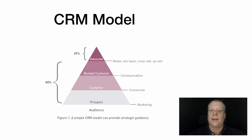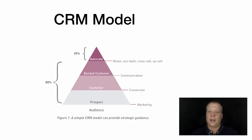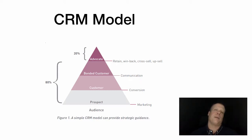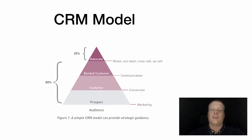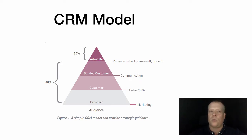A traditional model of customer relationship management starts with the idea that you first begin by marketing to an audience — a target market. By marketing to them, some people show interest in your content: they might click on an ad, they might sign up for a newsletter. They then become what we call a prospect, someone who has shown interest that you can develop.